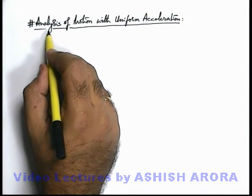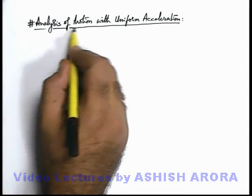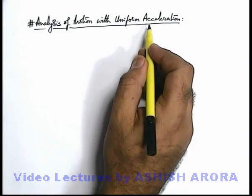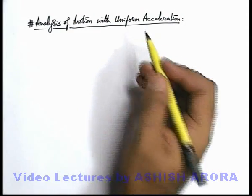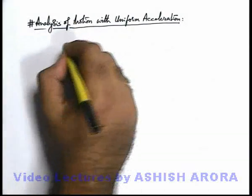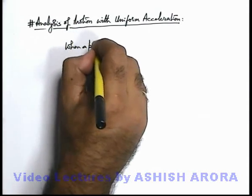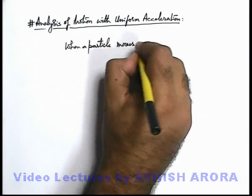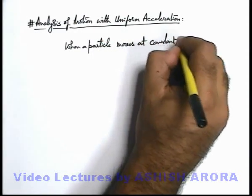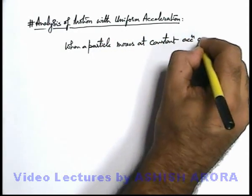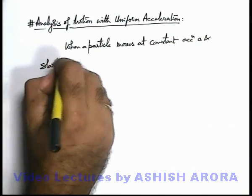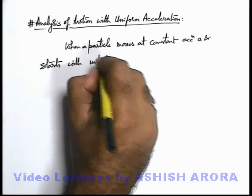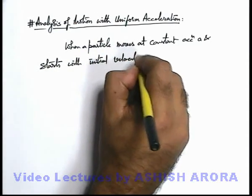Now we are going to discuss motion analysis with uniform acceleration. When a particle moves with uniform acceleration in rectilinear motion, say when a particle moves at constant acceleration a and starts with initial velocity u.